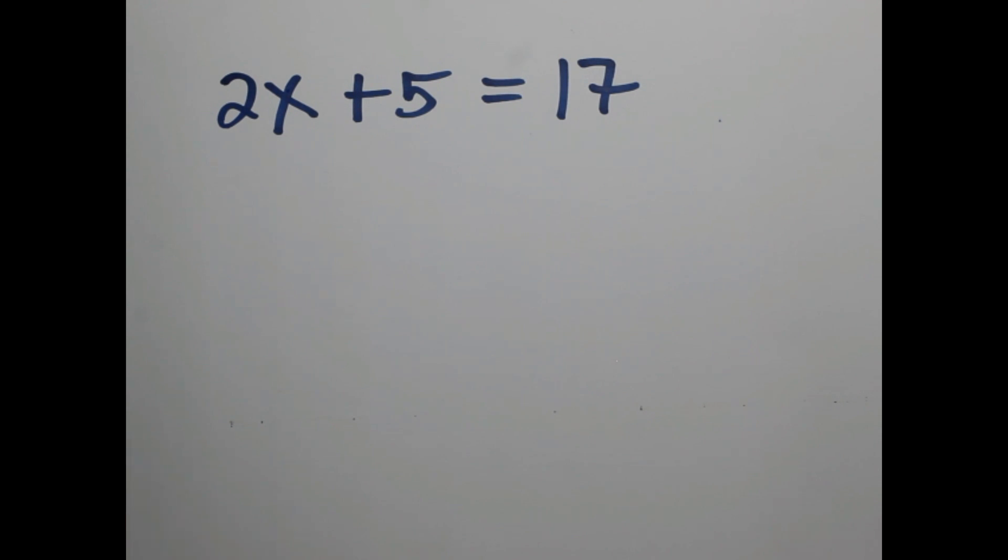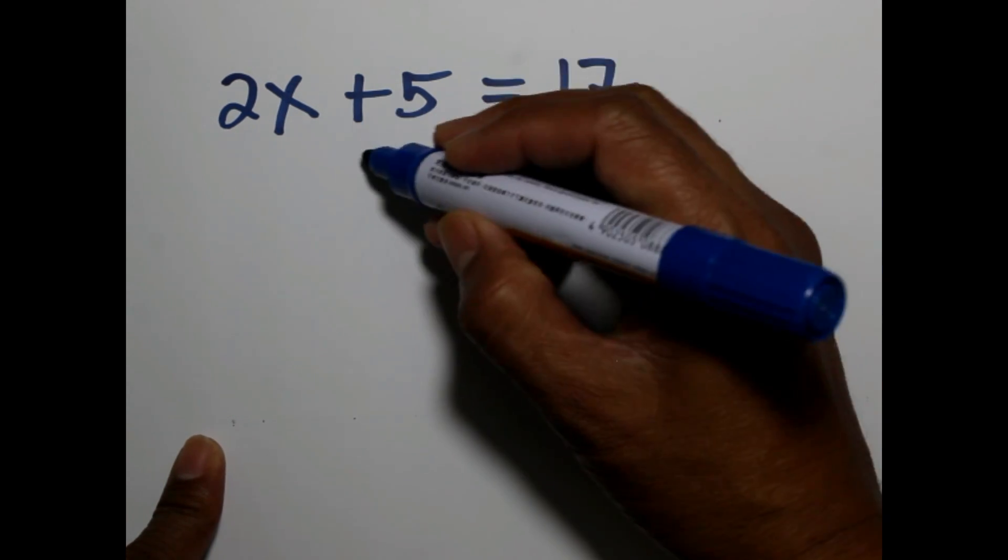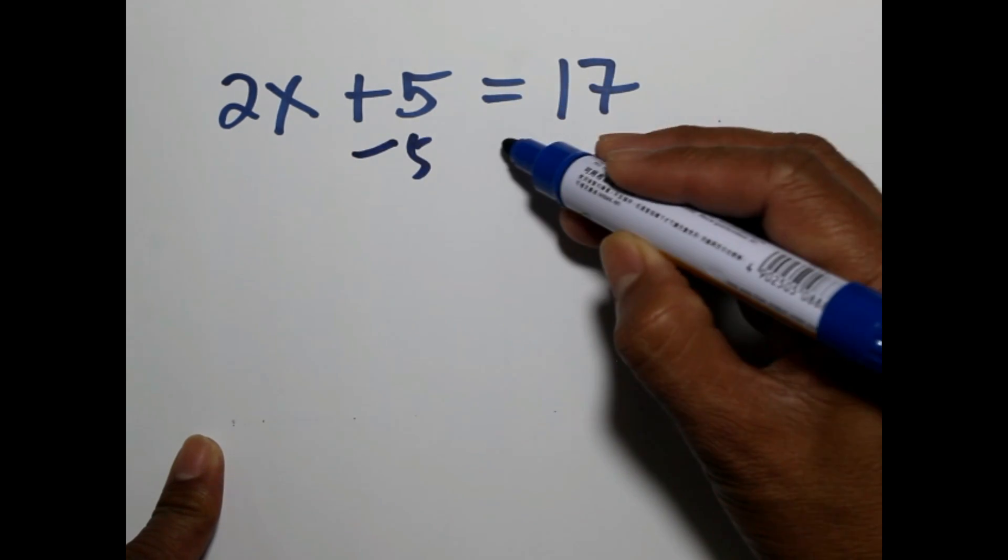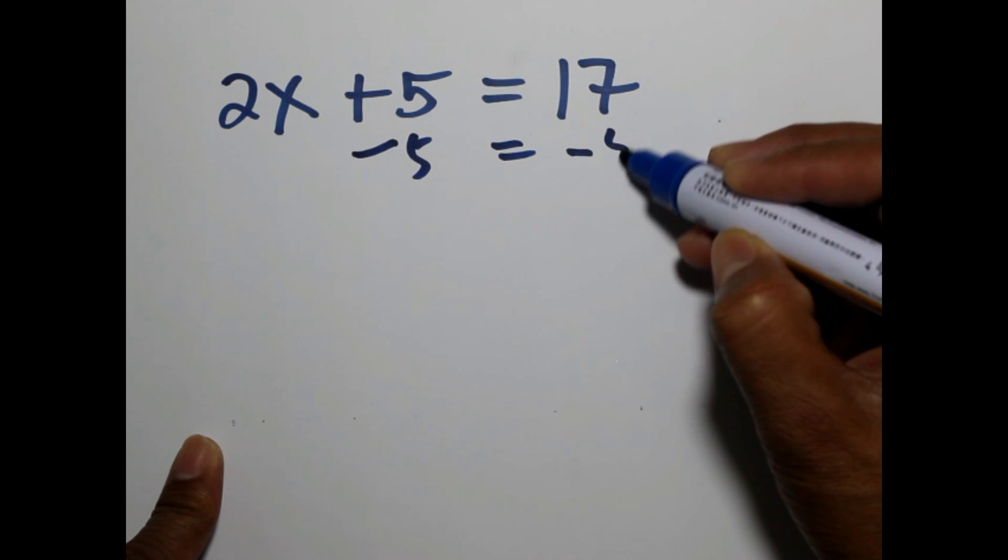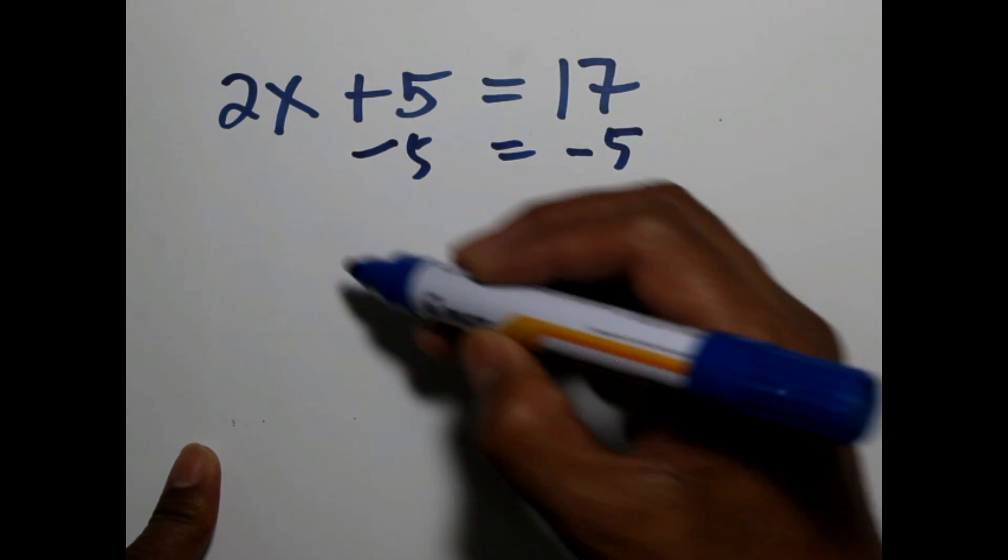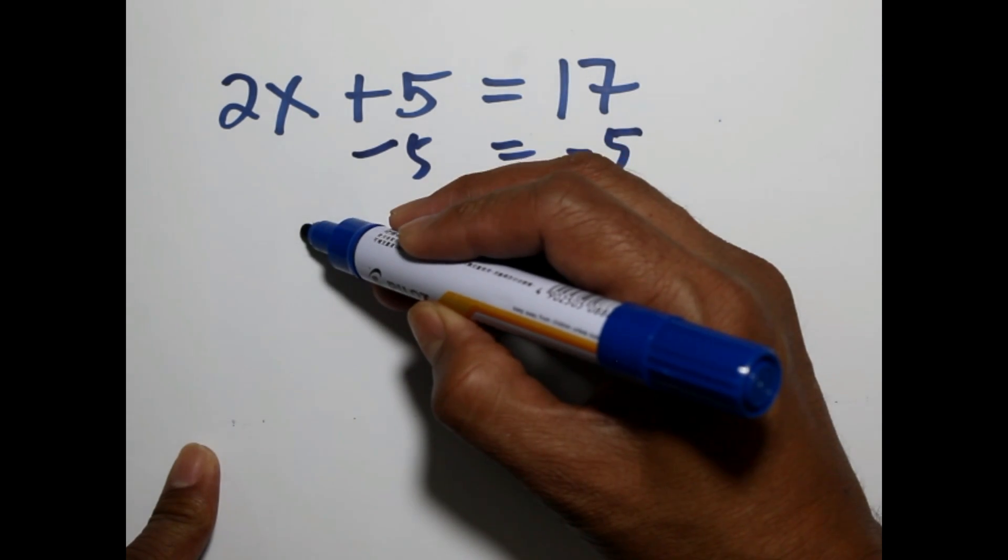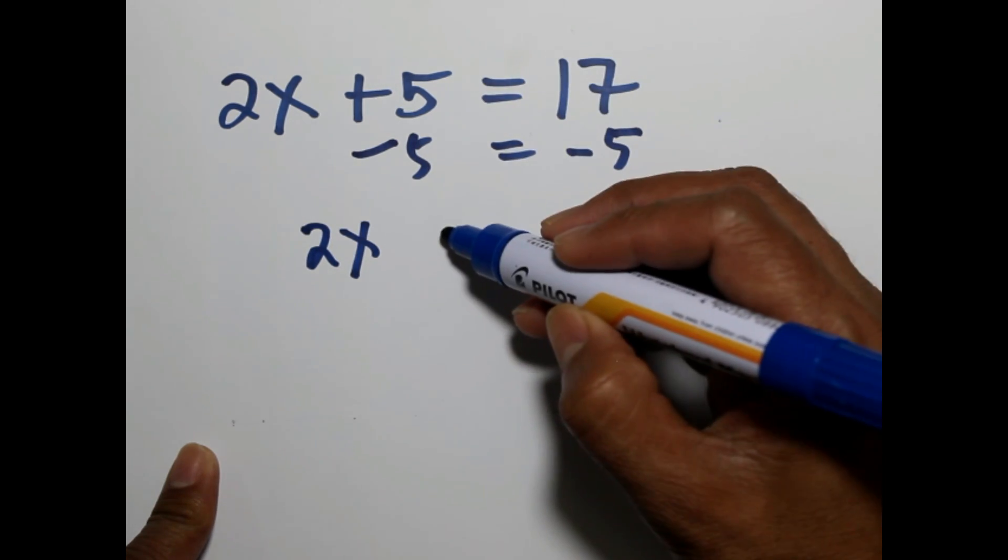Take note that we will gather the x term on one side and the constant on the other side. In this case, we are going to eliminate positive 5 by subtracting 5. We will subtract 5 from both sides. So bring down 2x, 5 minus 5 is 0, equals 17 minus 5 which is 12.